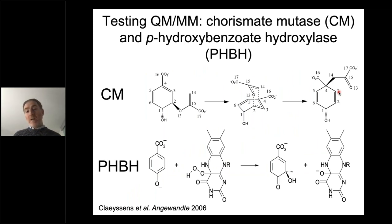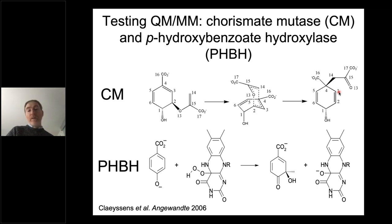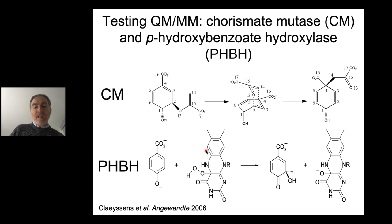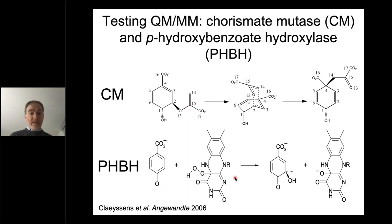DFT is our workhorse for many calculations, but it is not systematically improvable and we don't know a priori whether results with one functional should be better or worse than results with a different functional. So how well can we do? If we take two guinea pig enzymes — chorismate mutase and parahydroxybenzoate hydroxylase — we can do calculations testing the level of QM theory to see how well we can predict the barrier. These are well-characterized enzymes: chorismate mutase involves a Claisen rearrangement and PHBH an electrophilic aromatic substitution.